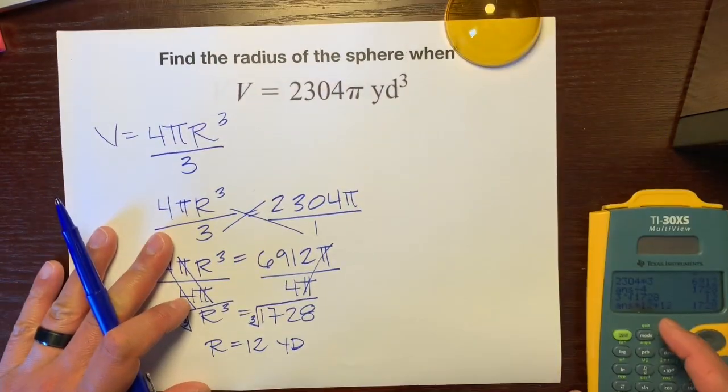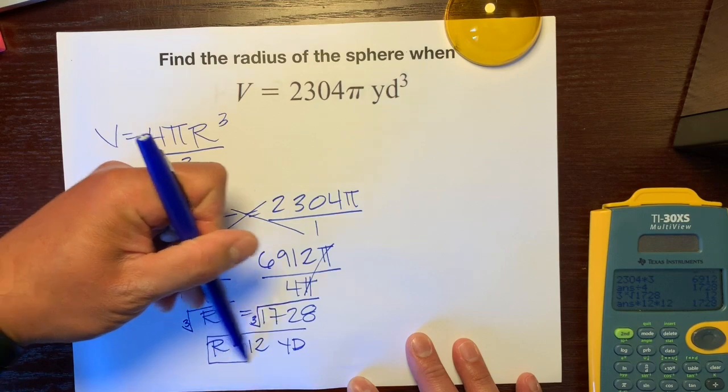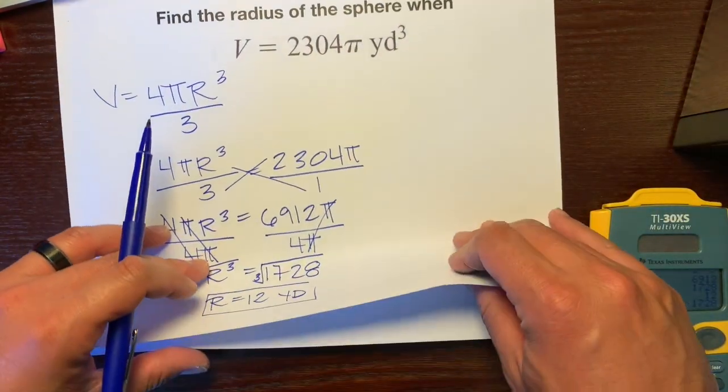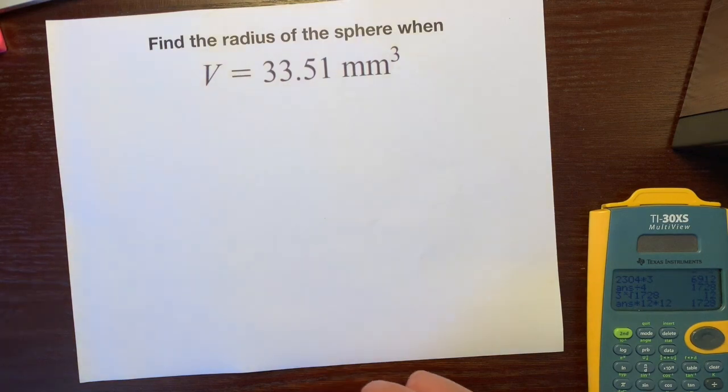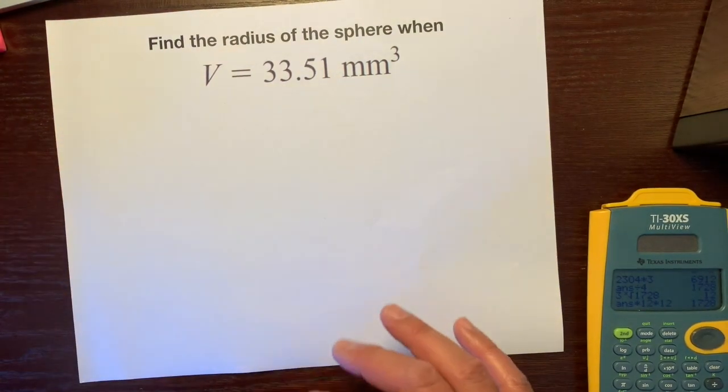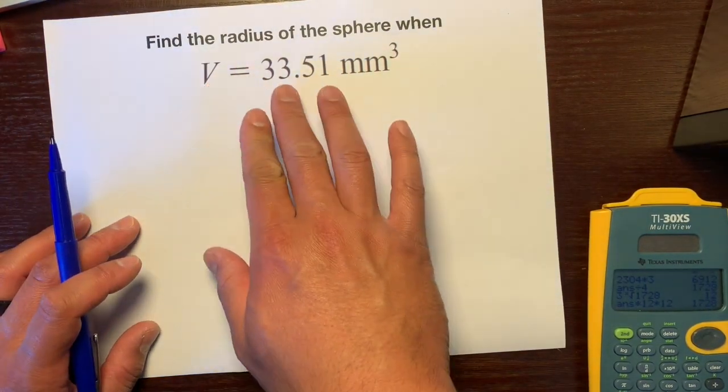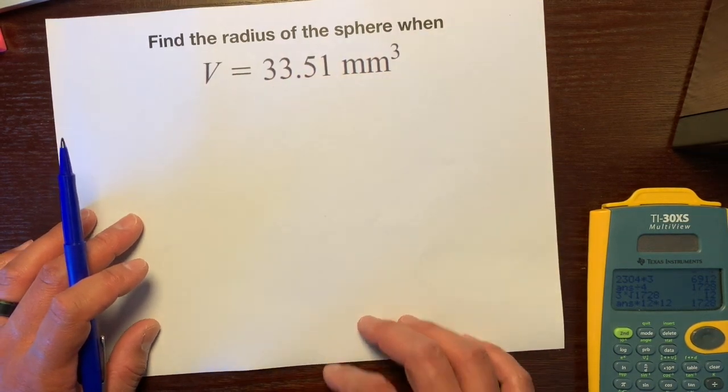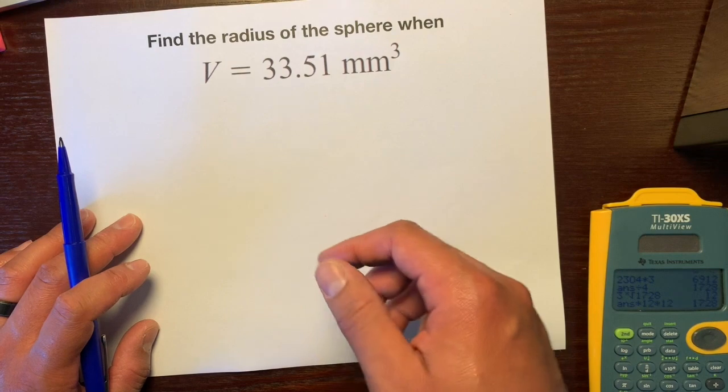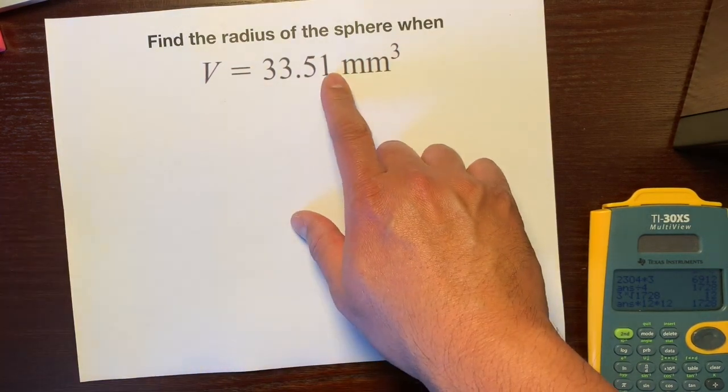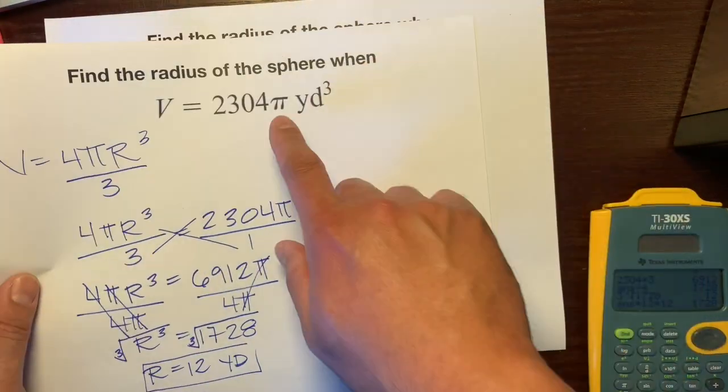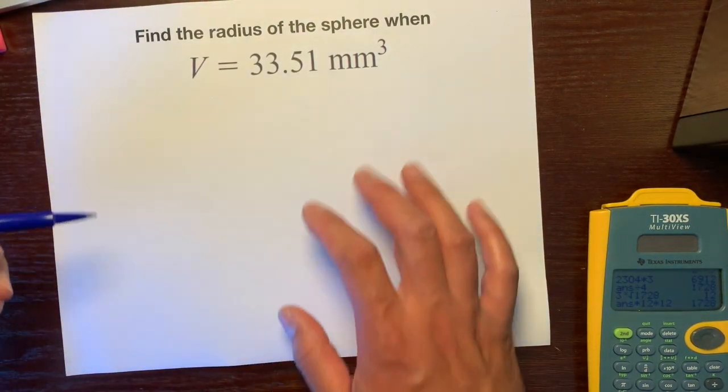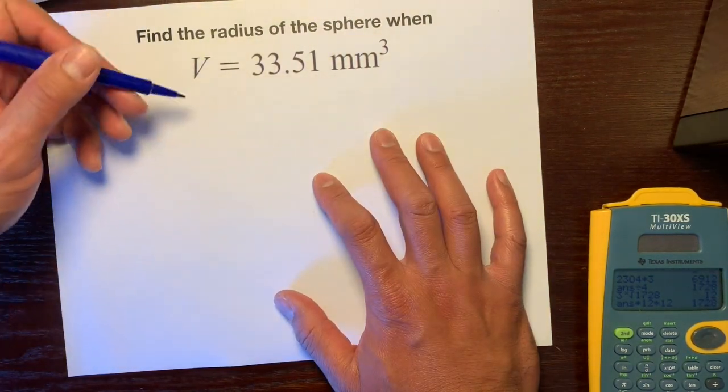All right, let me show you another example. It might be a little more challenging, but it's all the same steps. Find the radius of the sphere when the volume is 33.51 millimeters cubed. The difference between this problem and the previous problem is there isn't a π there, but still the same process.